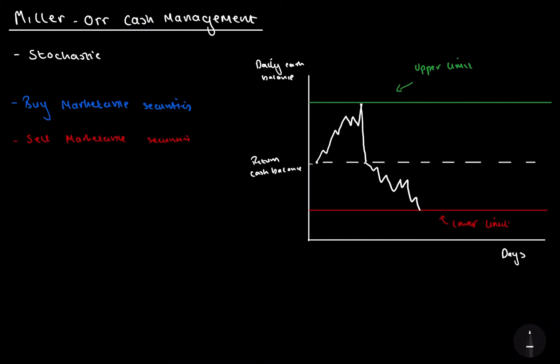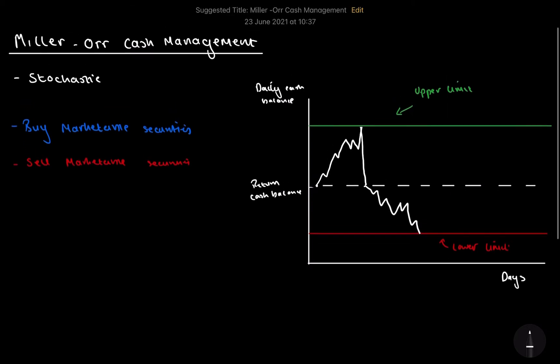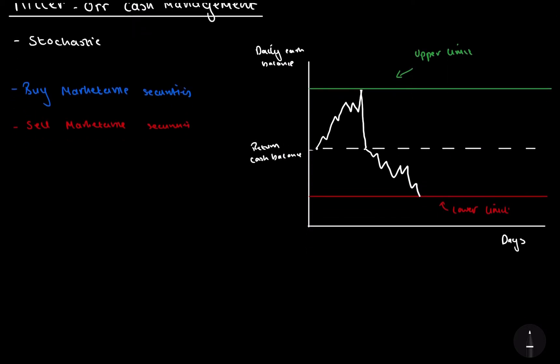Now, marketable securities are fairly liquid, so we can get our money out really quickly. These things can be stocks, bonds, sometimes maybe even property, but that's not as liquid. But essentially, we sell marketable securities worth the difference between the return point and the lower limit. And therefore, as you can probably guess, we're going to go straight back up to the top.